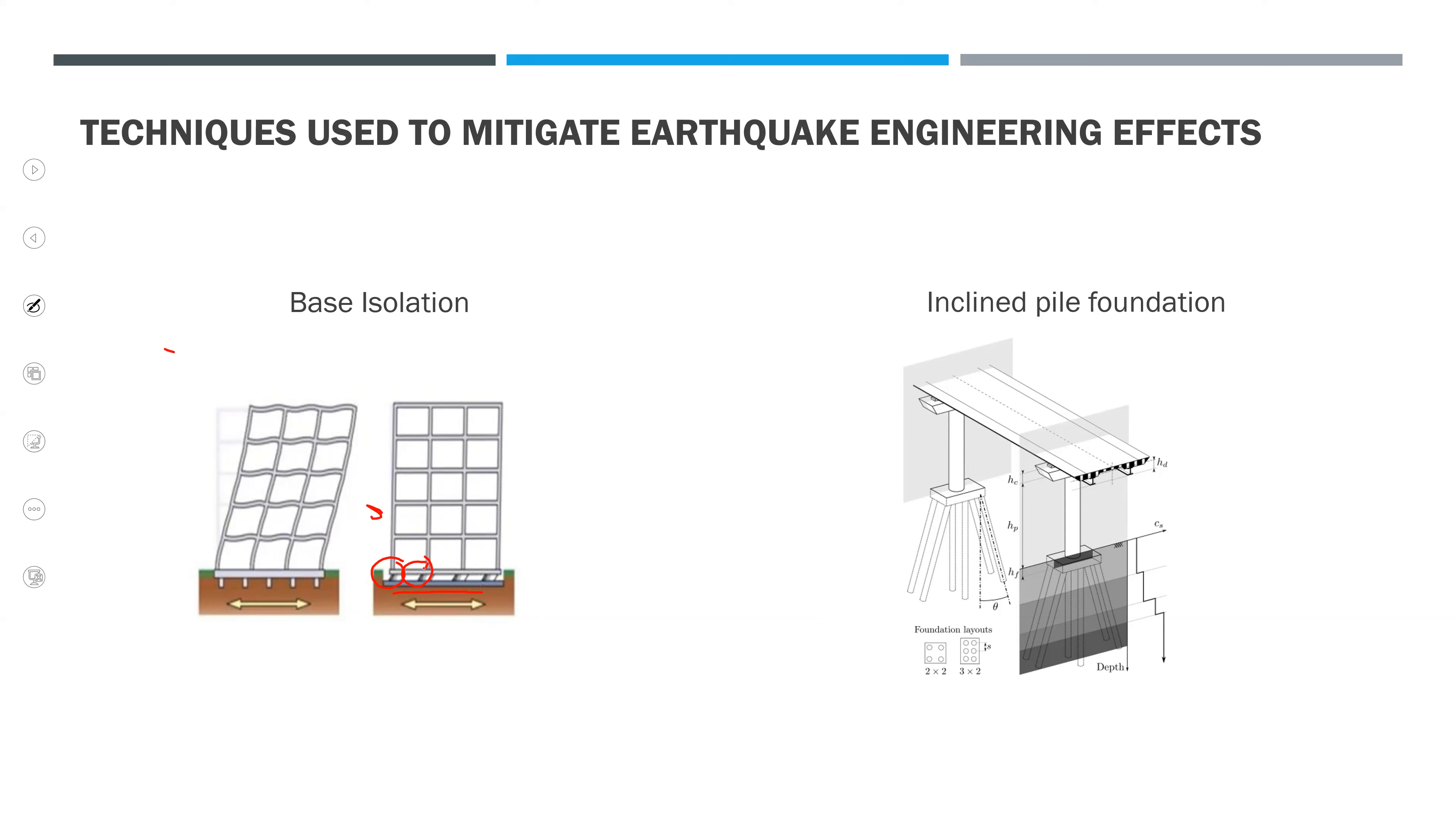This is the other way, the inclined pile foundation, which involves driving piles into the ground at an angle rather than vertically. It is used in slope stabilization but also to mitigate the earthquake risk.